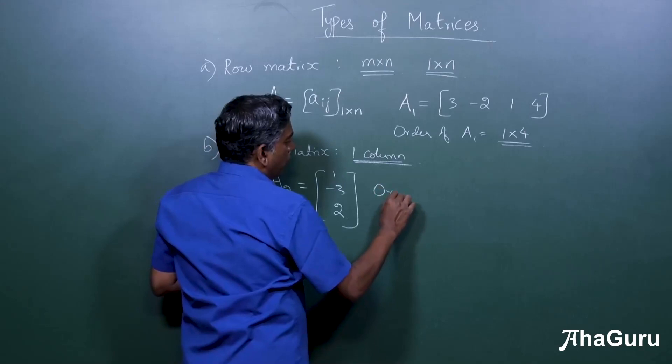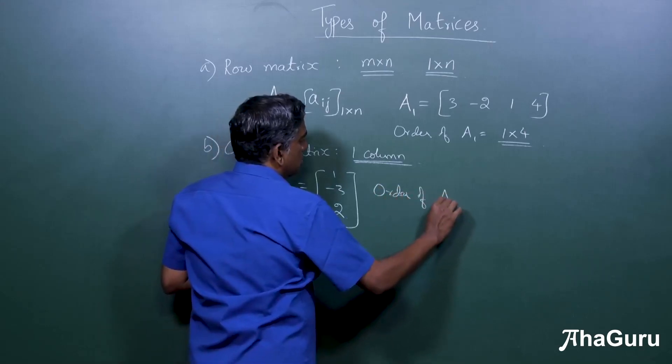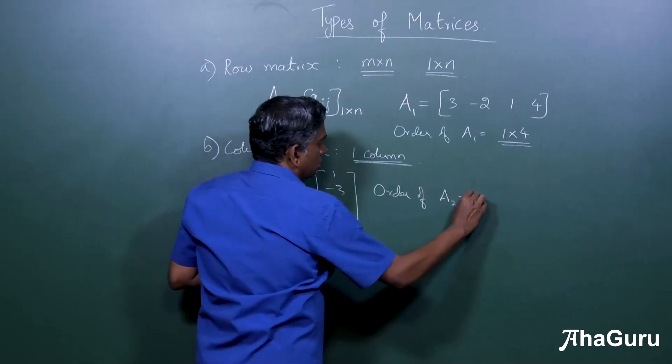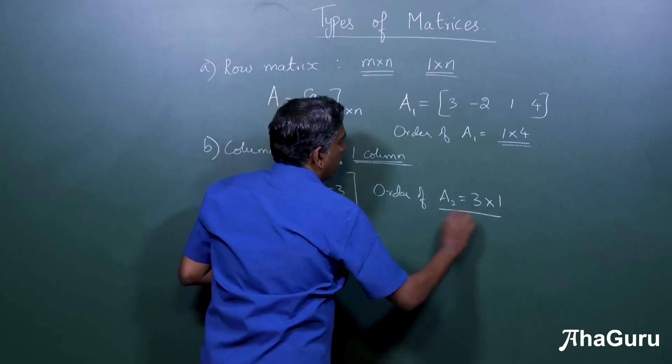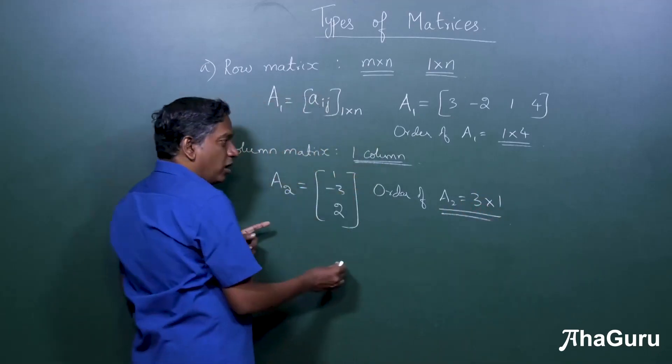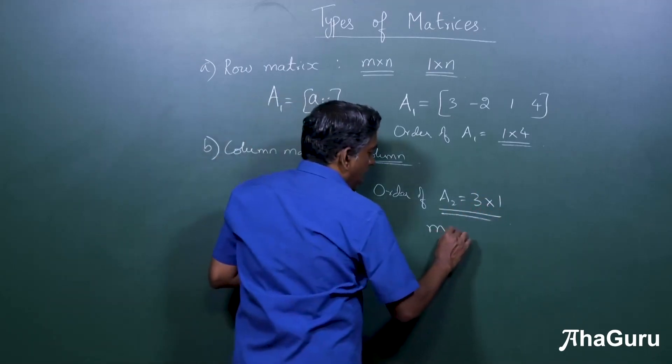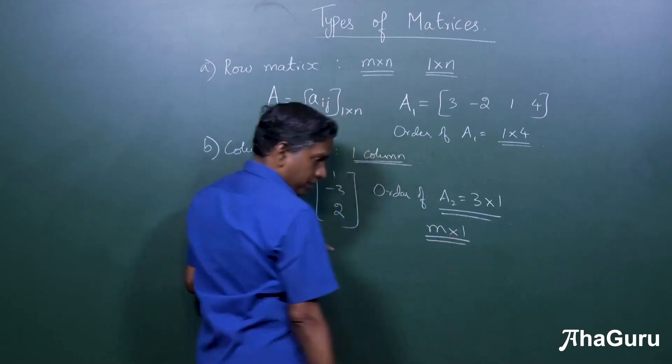So the order of a2 is equal to three by one. Three rows, one column. In general it is m by one.